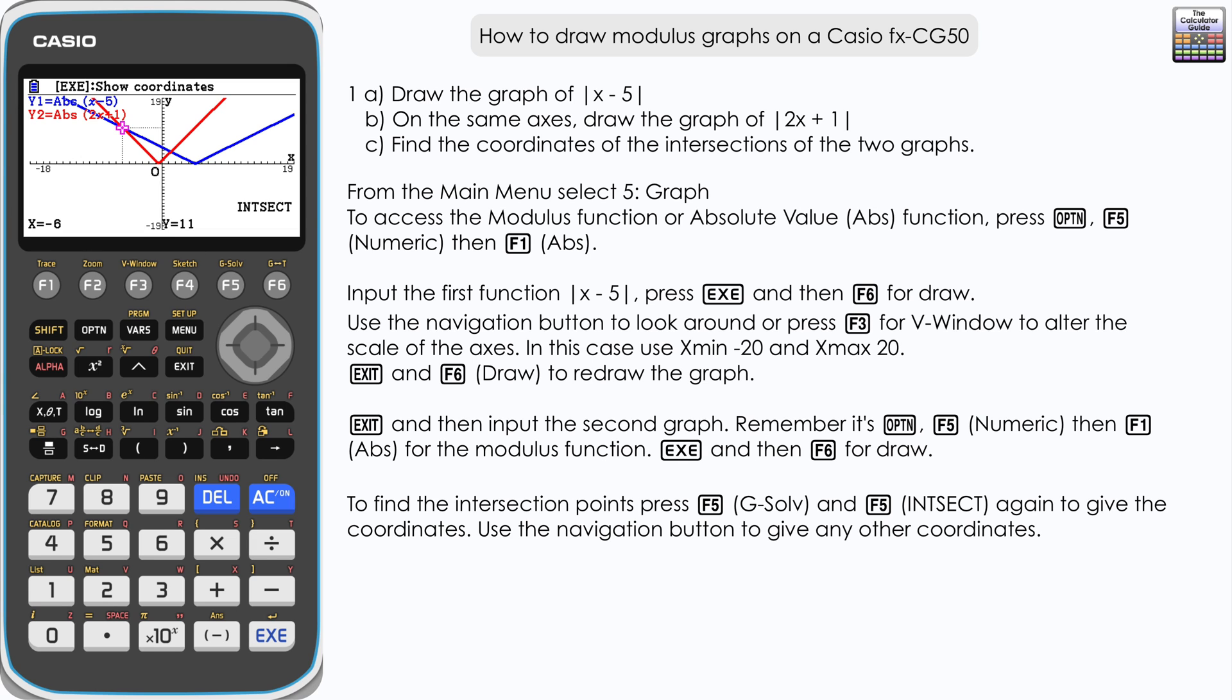If you press right on the navigation key, you've got the coordinates of the second intersection point. They're given here as a decimal, but we've got x as four thirds and y as 11 thirds if we give those as a fraction.